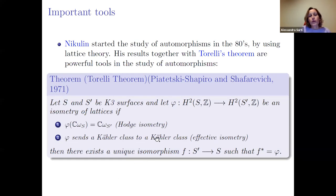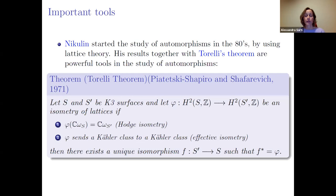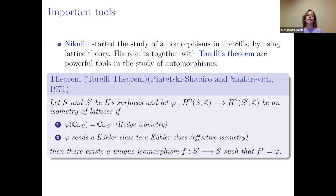The Torelli theorem, from Katsyuk, Shapiro, and Shafarevich, says: if you have two K3 surfaces S and S′ and an isometry of their H² lattices that is a Hodge isometry — sending the period of one to the period of the other and a Kähler class to a Kähler class — then there is a unique isomorphism from S′ to S inducing that isometry. The interesting case for us is S′ = S.